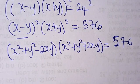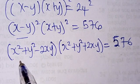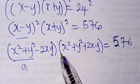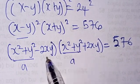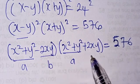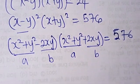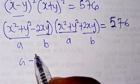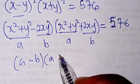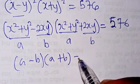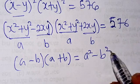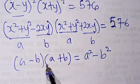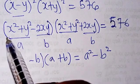Now let's substitute: let a equal x squared plus y squared, and let b equal 2xy. Using the difference of two squares identity, a minus b times a plus b equals a squared minus b squared. So I replace x squared plus y squared with a and 2xy with b.